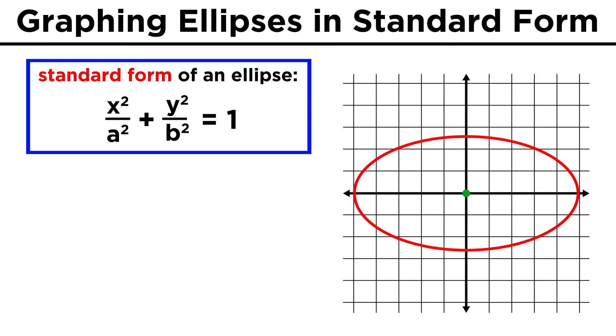The standard form of the equation of an ellipse that has its center at the origin looks like this. It's similar to the equation for a circle, but we have these terms A and B, which give us information about the major and minor axes.